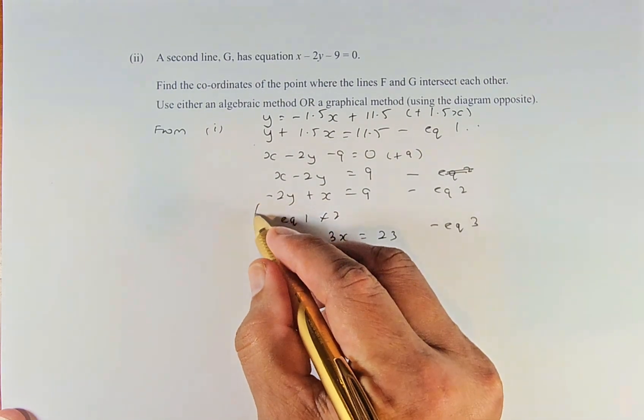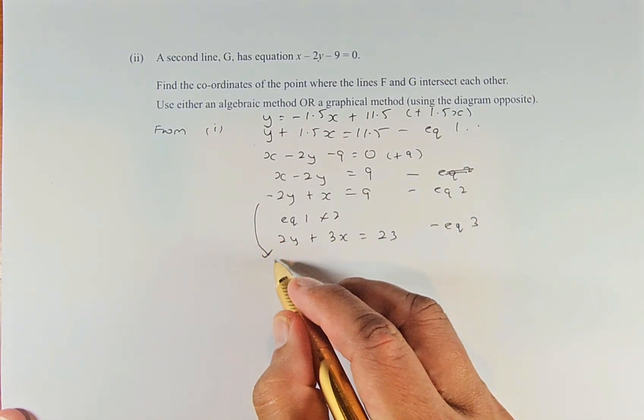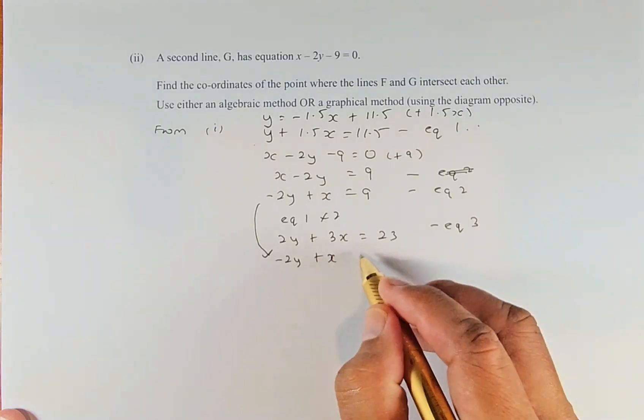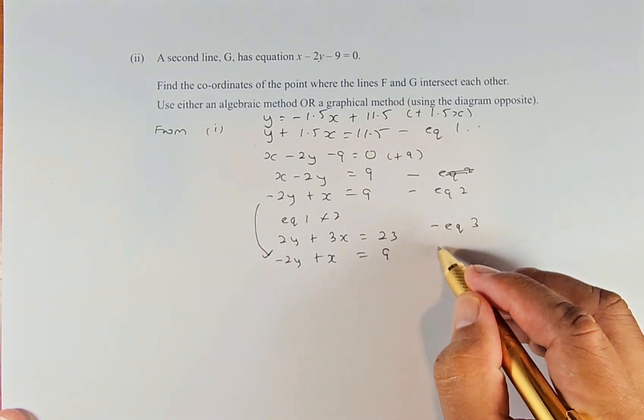Now we bring this down. Equation 2 is -2y + x = 9.